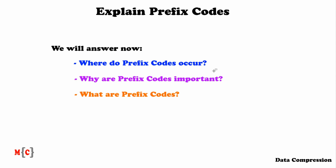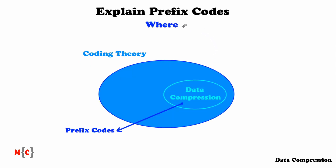Prefix codes are part of the coding theory field, which is a subfield in computer science about inventing new codes and analyzing their performance. Within coding theory we have different subfields: the data compression field, also known as source coding, as well as cryptographical coding and error control, which is about error detection and correction codes. These coding fields can overlap, and prefix codes are mainly part of data compression. So now you have an idea of where prefix codes are applied within computer science.